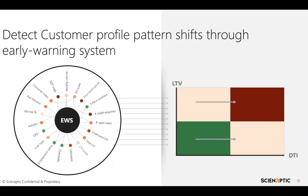Similarly, another way banks can create early warning signals is by leveraging transaction data, which is now in banks' own systems. One can look at changes in salary income, which provides an added advantage in these stress times where payment holidays mask credit risk for some time. If the bank evaluates that there is a significant change in salary income while debt levels remain the same due to forbearance, the denominator of the debt-to-income ratio shifts and credit risk gets recalibrated — allowing timely interventions to be made for those customers.